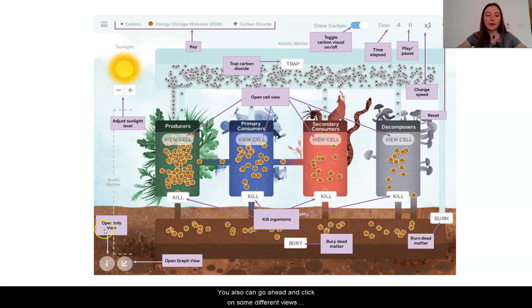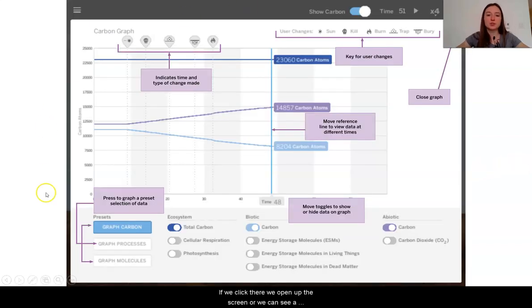You also can go ahead and click on some different views in the bottom left-hand corner. Notice there's one that says Info View, which will allow you to see little tables of information. And there is also the option to open Graph View. If we click there, we open up the screen where we can see a graph of all the different things happening in the digital model.